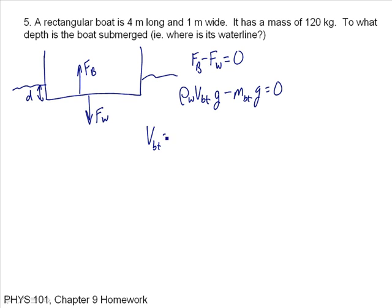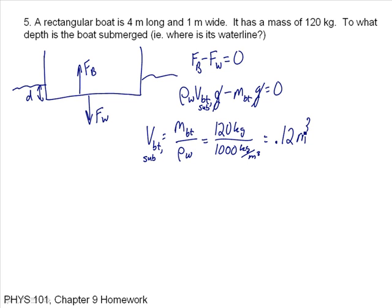I'm going to solve this for the volume of the boat. The G's cancel. So the volume of the boat is equal to the mass of the boat over the density of the water. Now that's not entirely true. This is the volume of the boat that is submerged. Not all of the boat is submerged, fortunately. So it's the submerged portion of the volume of the boat. And that's equal to 120 kilograms over the density of water, which is 1,000. And that gives me 0.12 cubic meters. So 0.12 cubic meters of this boat is submerged when it floats.